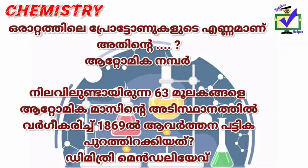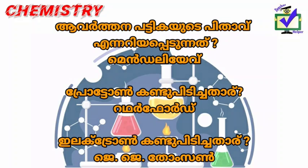Dmitri Mendeleev. Atomic mass — in the distance of 1869 it is natural. Demetrie Mendeleev. Proton is natural. He is called Rutherford. He is called J.J. Thomson. He is called Rutherford. Dimitri Mendeleev's.